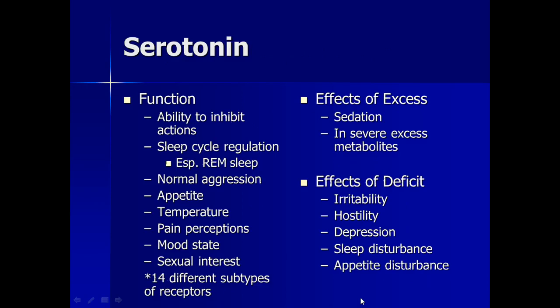Serotonin is found in the brain and spinal cord, and is especially widely distributed in the brain stem. It also has many projections into the limbic system. Importantly, there are 14 different subtypes of receptors for serotonin — therefore, it's not surprising that serotonin influences many, many behaviors. Simply put, serotonin aids in the transmission of signals to assist in regulating mood, memory, learning, and appetite.